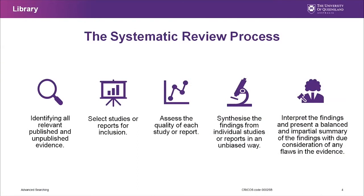The systematic review process starts with identifying all relevant published and unpublished evidence — that's what librarians have long experience with. The next steps are selecting studies for inclusion, assessing the quality of each study, synthesizing the findings in an unbiased way, and then interpreting and presenting a balanced summary of the findings with due consideration of any flaws in the evidence.